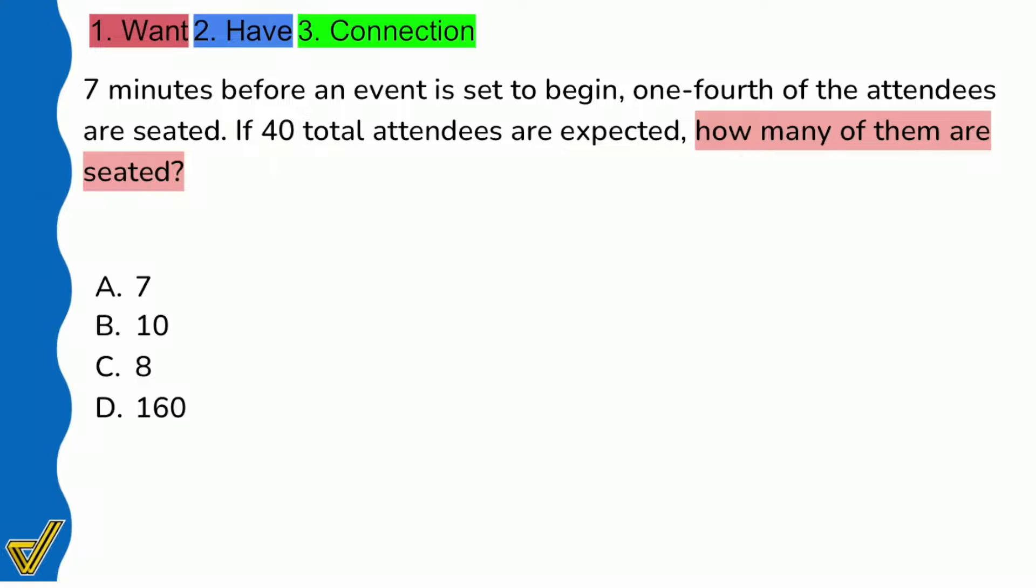So there we are, how many of them are seated? I'm looking for the number of folks that are seated equals blank. Next up, we're going to take a look at the information that's given. Seven minutes before an event is set to begin, one-fourth of the attendees are seated. If 40 total attendees are expected, how many seated?